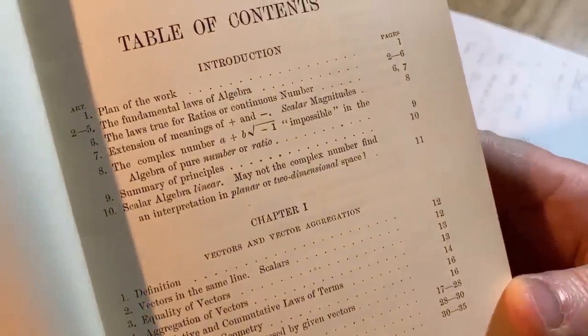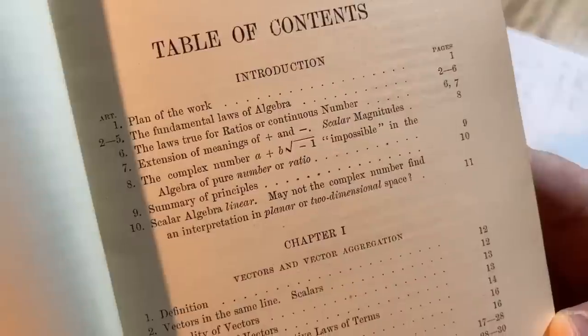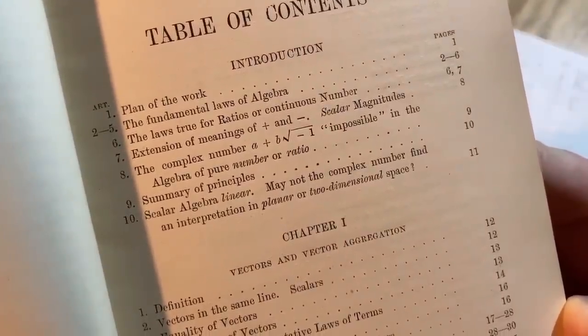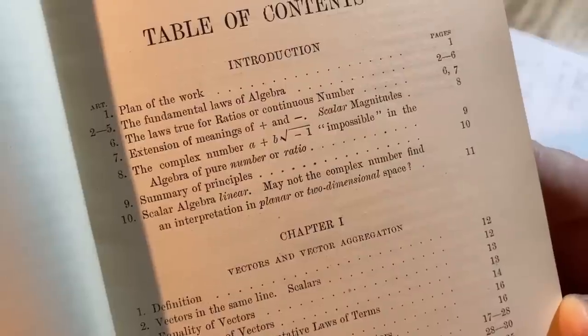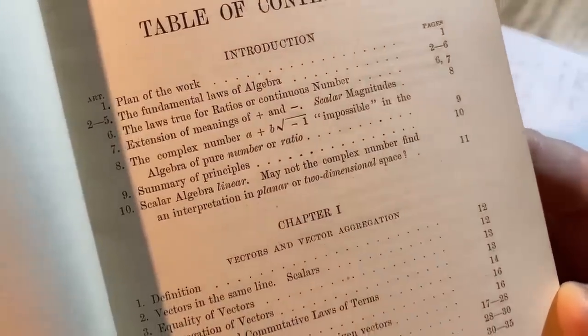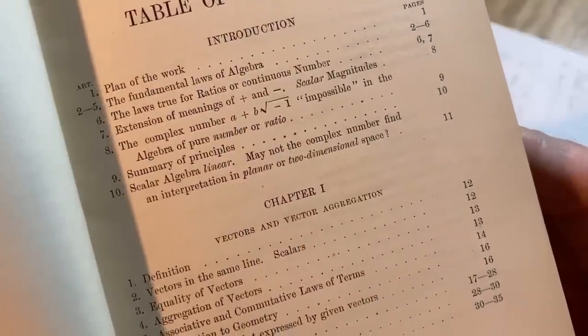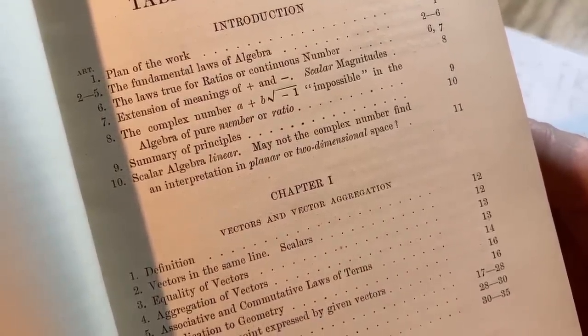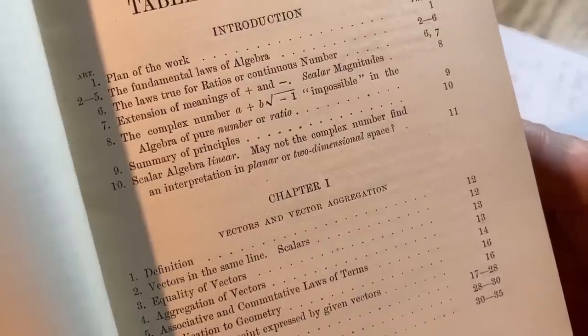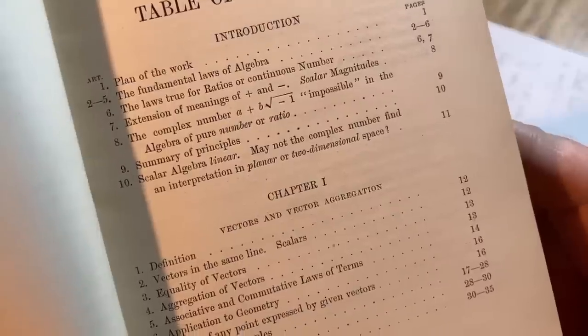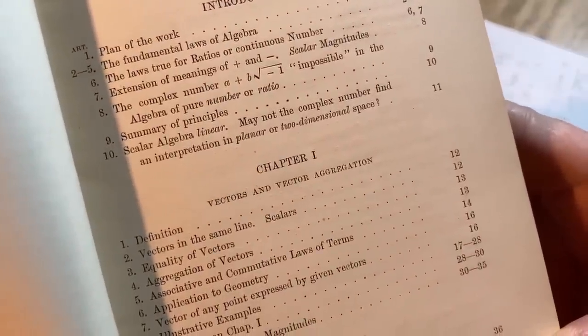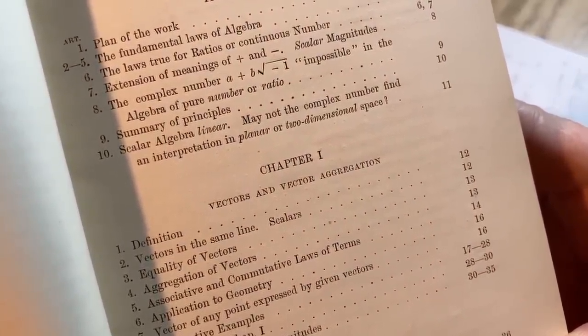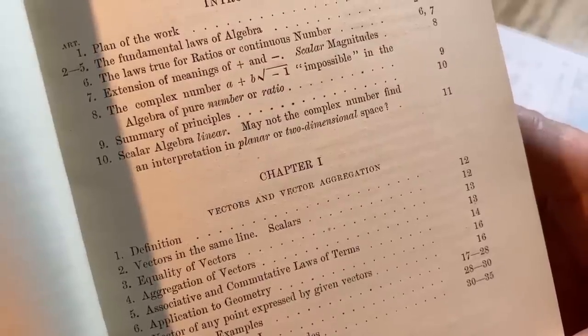So let's look at the contents. Plan of work, the fundamental laws of algebra, the laws true for ratios and continuous number, the complex number a plus b times the square root of negative one impossible in the algebra of pure number or ratio. Summary of principles, scalar algebra, linear. May not the complex number find an interpretation in planar or two-dimensional space?